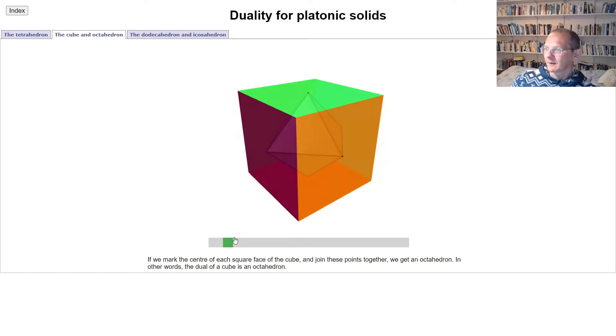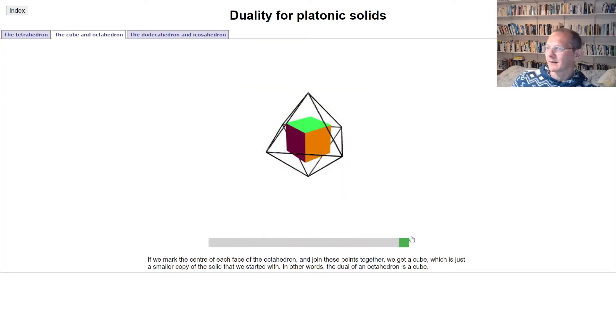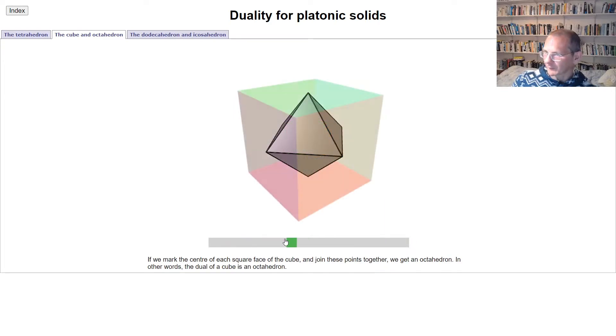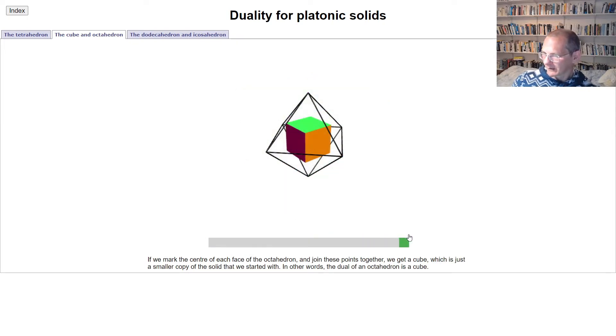So there's the cube and there's the cube right in the middle. If we do this process twice, firstly we get an octahedron and then secondly we get a cube and it's kind of exactly the same cube as we started with but just shrunk down a bit.